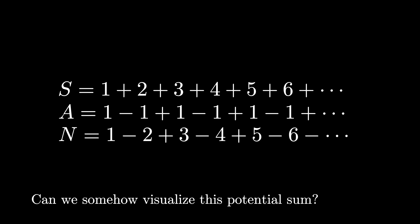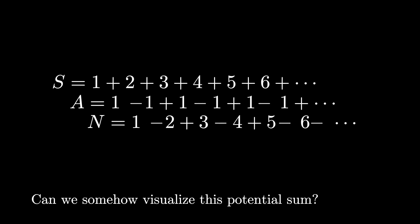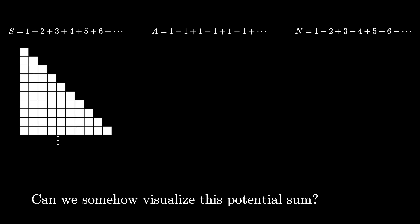To visualize each of these infinite sums, we'll use the following convention: a shaded filled square will represent positive 1, while an outlined hollow square will represent negative 1. So the infinite sum S can be represented by a triangular array of filled squares, where there's one square in the first row, two in the second row, three in the third row, and so on — an infinite triangular array with row n representing the positive integer n.